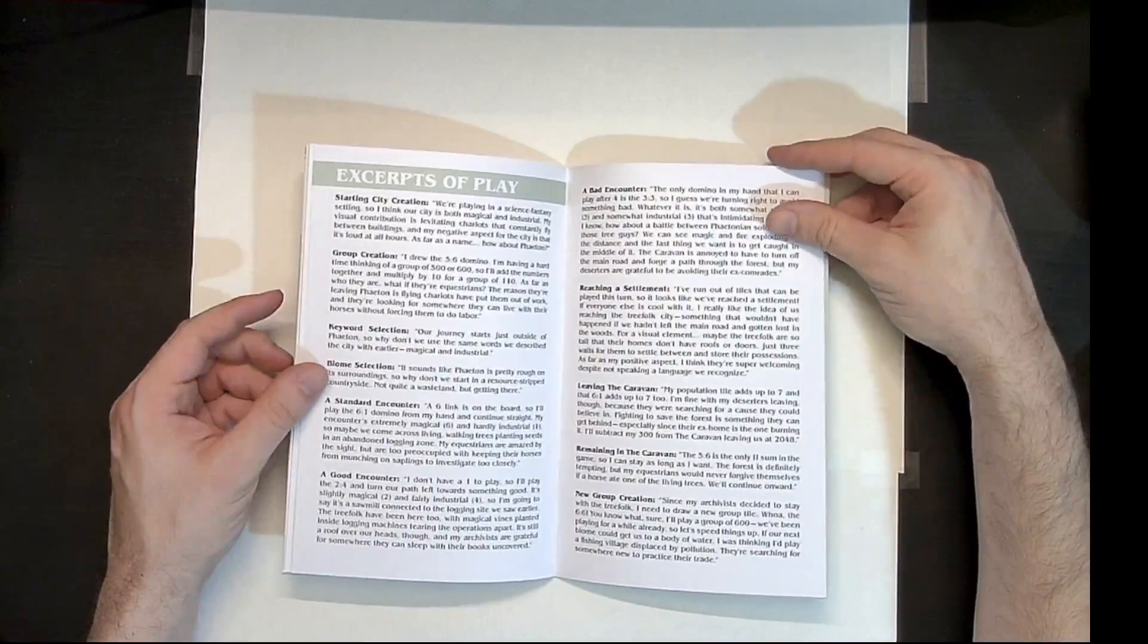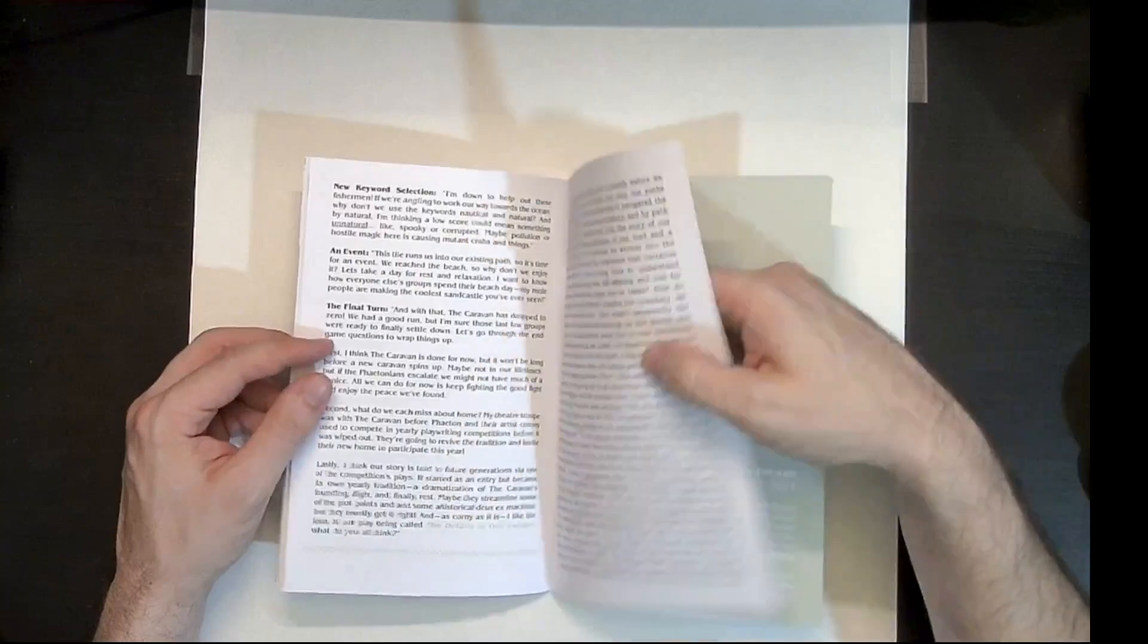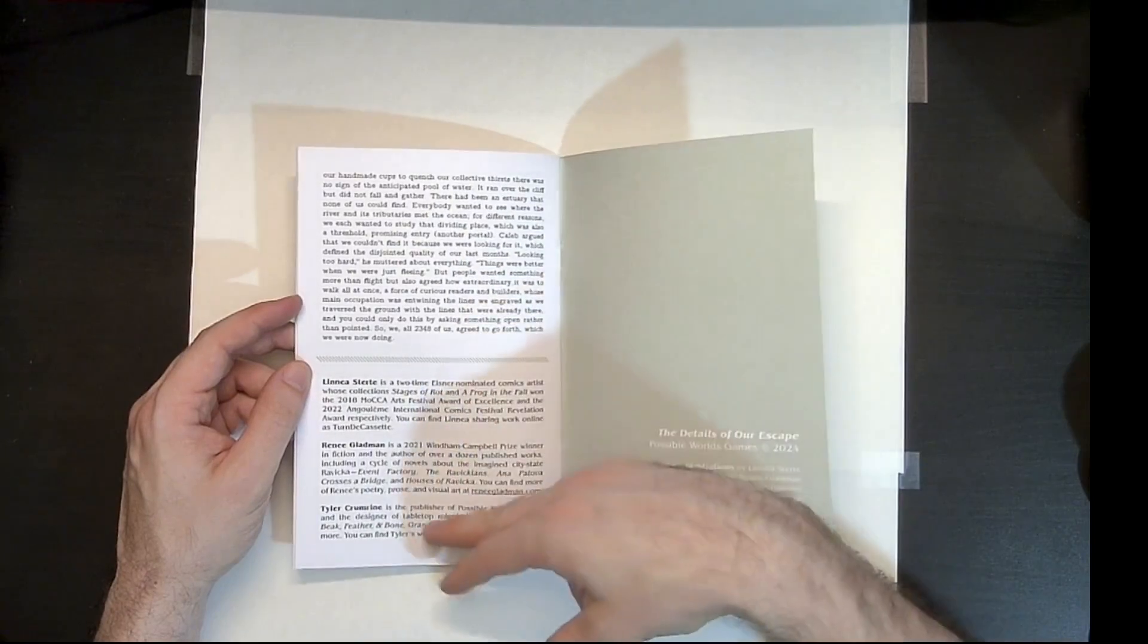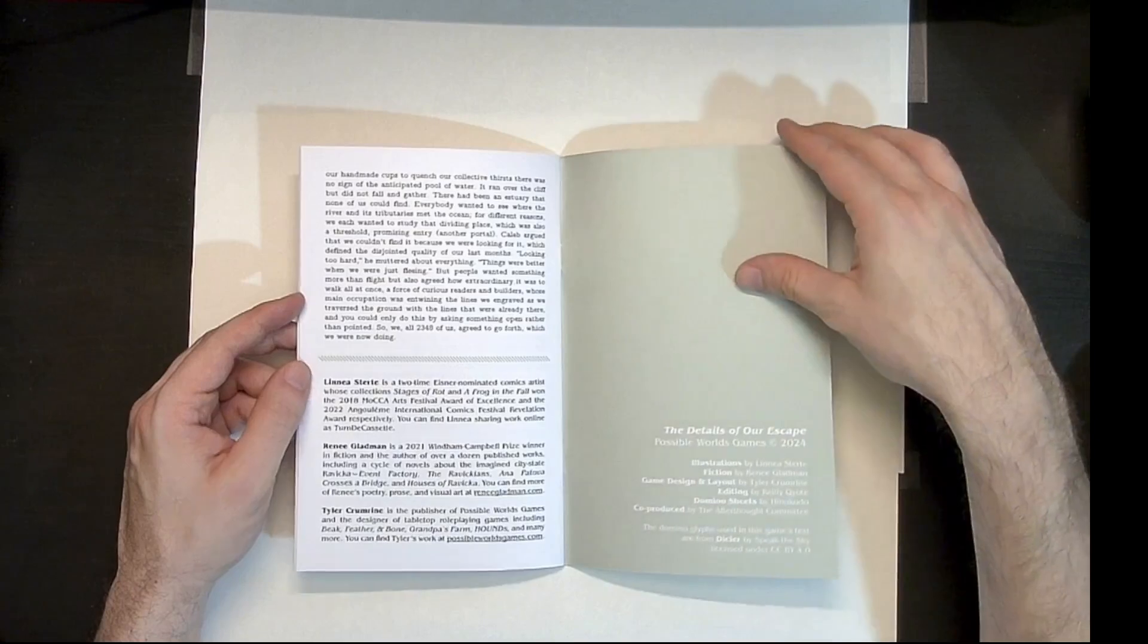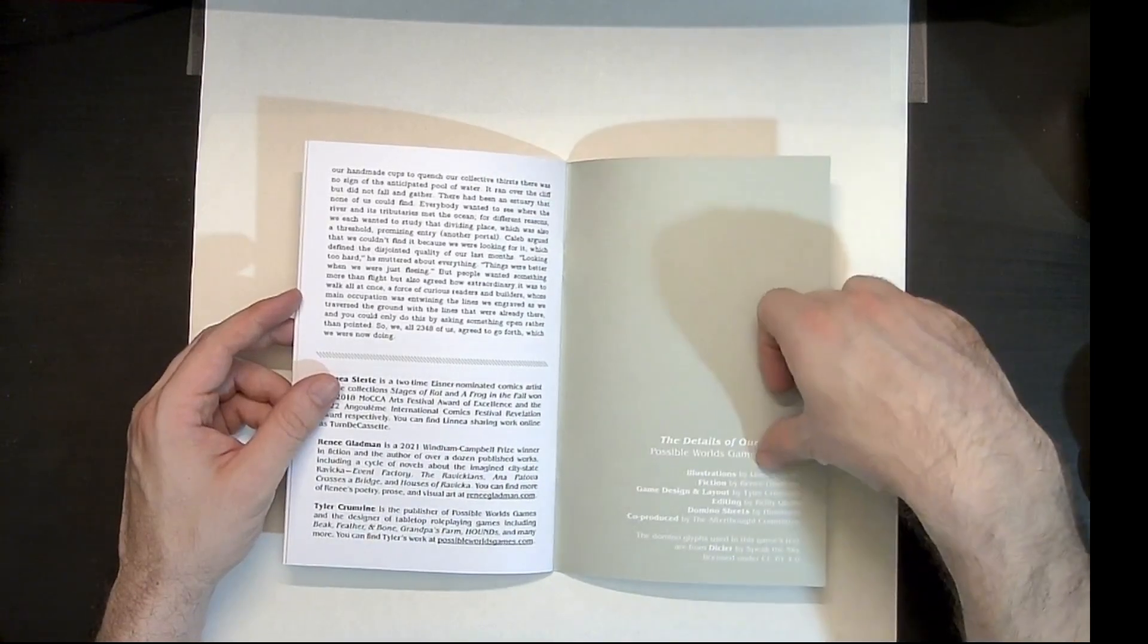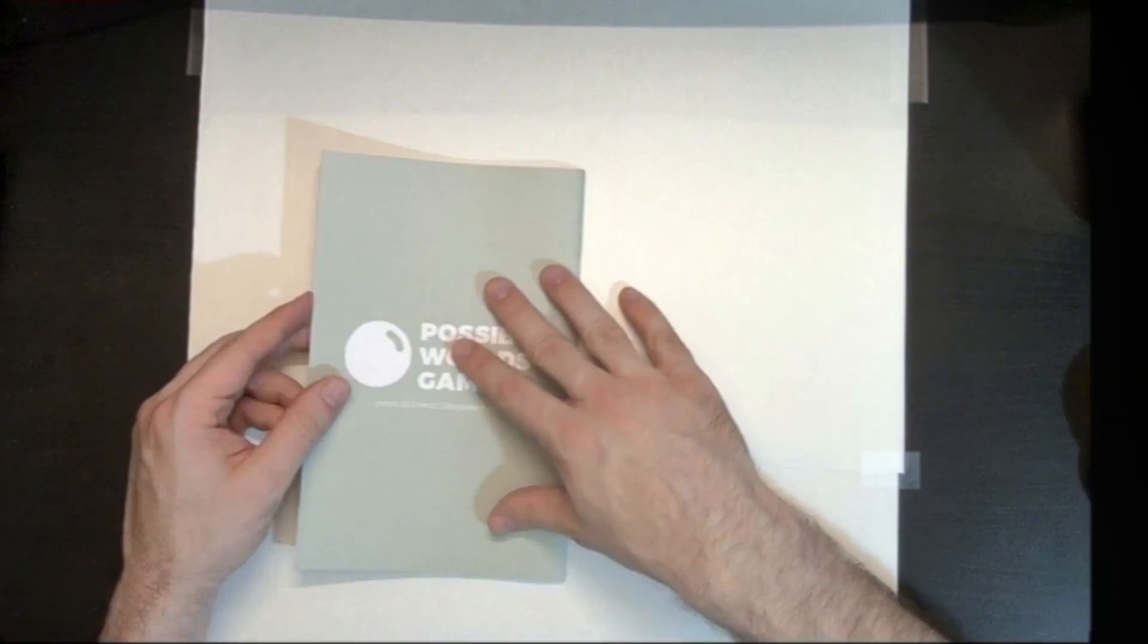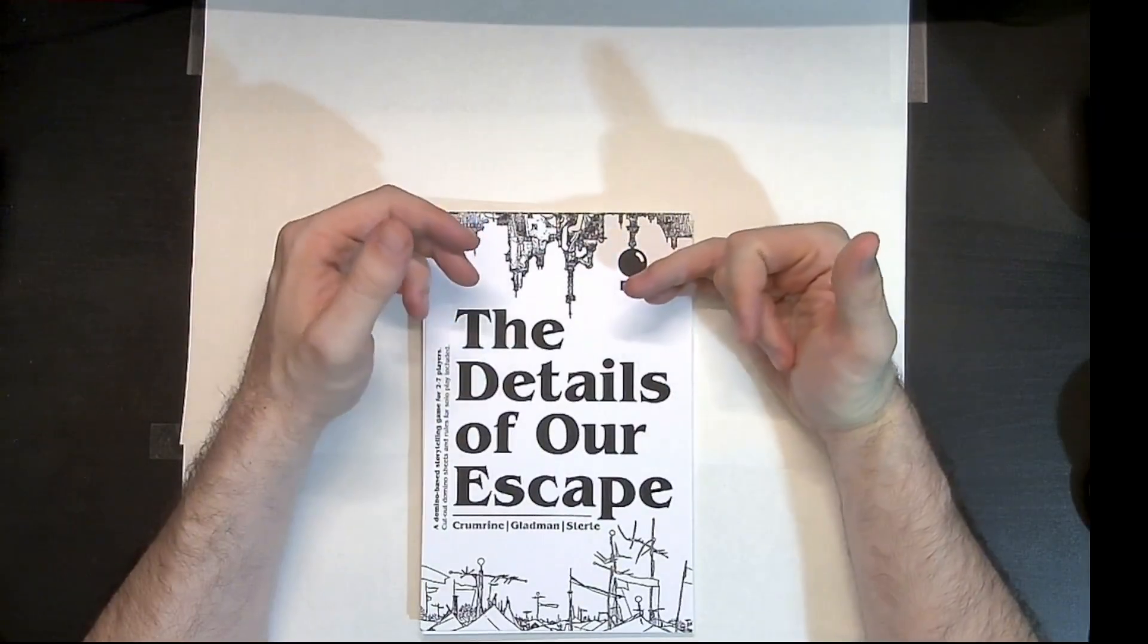And here we have excerpts from a play as an example. And more fiction. And then of course, so here on the back, we've got some basics of the, a basic blurb for the three creators. Basics about the domino sheet and some other things that are included. And yeah, there we go. So that was pretty much everything that was contained within The Details of Our Escape.